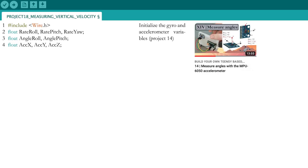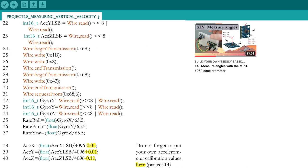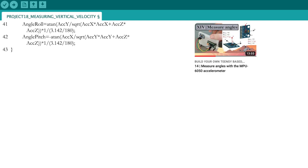First, initialize the gyro and accelerometer variables as seen in part 14. Define the acceleration in the inertial Z direction and the vertical velocity. Continue with the gyro and accelerometer MPU6050 function and do not forget to write down your own accelerometer calibration values in lines 38 to 40. At the end of the function, calculate the roll and pitch angles.